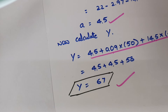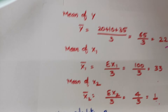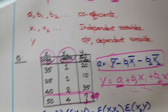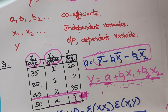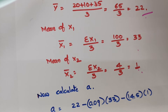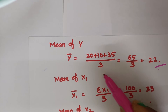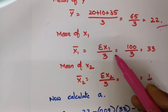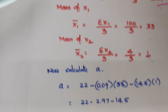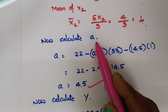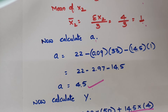After getting b1 and b2, calculate a. To find a, you need the mean of y: y-bar equals (20 + 10 + 35) divided by 3, which is 65/3, approximately 22. Calculate the mean of x1 as summation of x1 divided by the number of values, and similarly mean of x2 as summation of x2 divided by the number of entries. Applying the formula a equals y-bar minus b1·x1-bar minus b2·x2-bar gives a equal to 4.5.